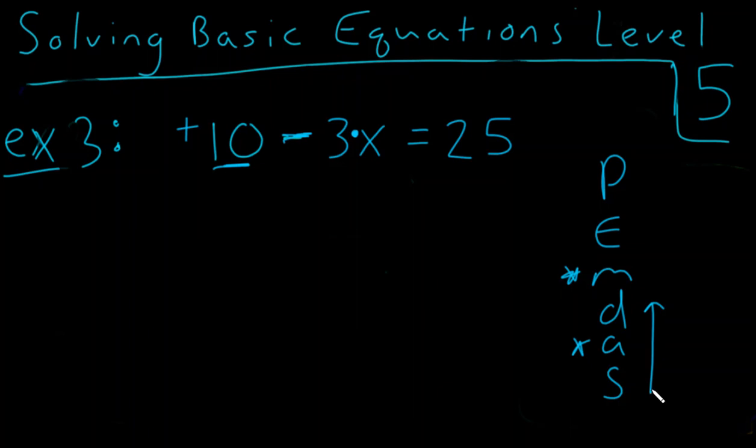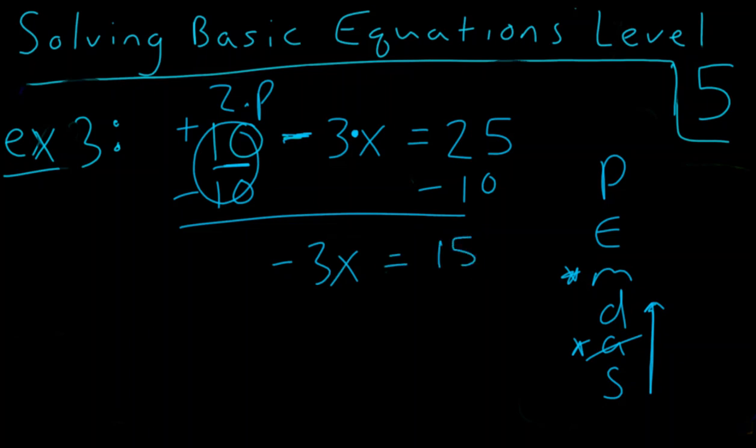And so, okay, so going from the bottom to the top, I say, how do I get rid of my addition? And I will subtract 10 from both sides, minus 10, minus 10. And, of course, I have my zero pair. And now I drop my minus 3x is equal to 25 minus 10, which is 15.